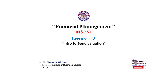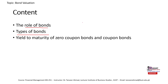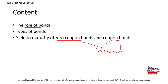Let's discuss the contents. First we need to understand what a bond is and its role, what are the different types of bonds, and then in future lectures we will study how to evaluate a bond — how to find the intrinsic value of a bond — for zero coupon bonds and coupon bonds. But that is for later lectures.